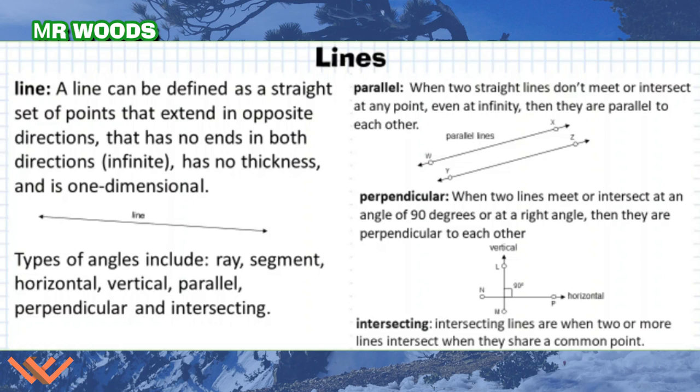Here's some more lines. So we have parallel lines here. So again, I have W, X, Y, and Z lines here. They're equidistance apart, so they're going to be going off into infinity and they will never meet.